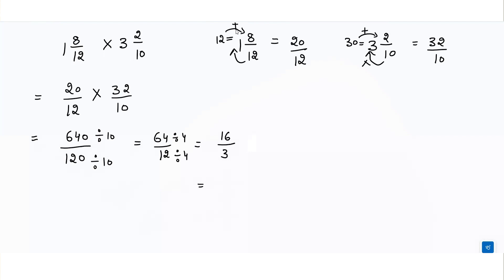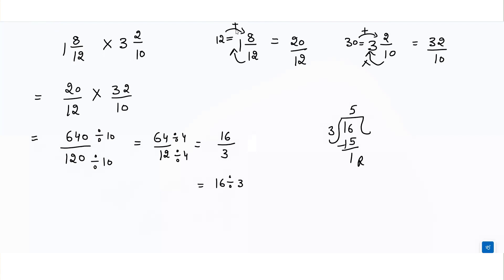Now we convert 16 over 3 into a mixed fraction. 16 divided by 3: 3 fives are 15, and we get 1 as the remainder. The divisor is 3, the quotient is 5, and the remainder is 1. So the final answer is 5 and 1/3. This is how we can multiply mixed fractions.